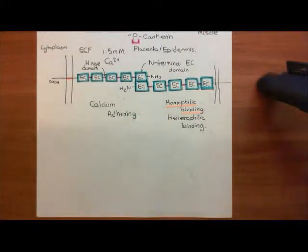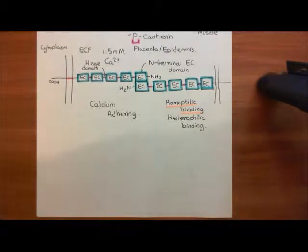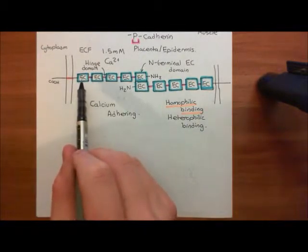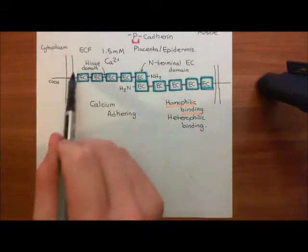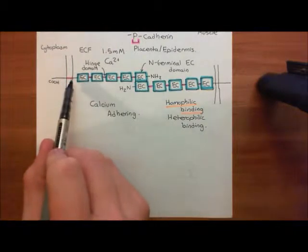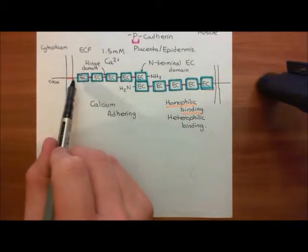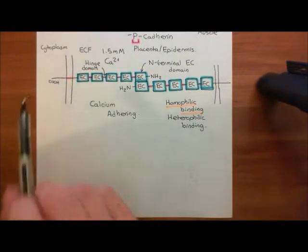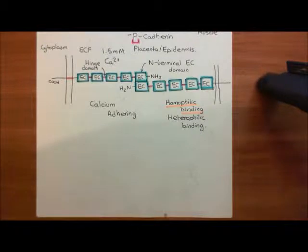Welcome back to this next video in which we are discussing the cadherin superfamily. We are in the process of discussing Type 1 classical cadherins. Type 1 classical cadherins have these five extracellular cadherin domains on their extracellular portion, then a single membrane-spanning alpha helix which crosses the membrane, then they have this cytoplasmic tail, and their carboxylic acid terminus is intracellularly.